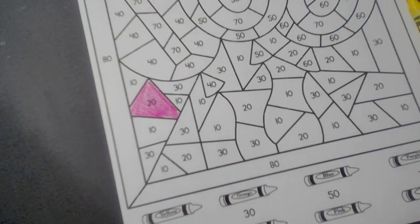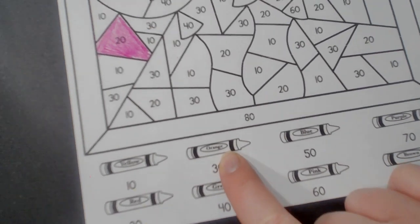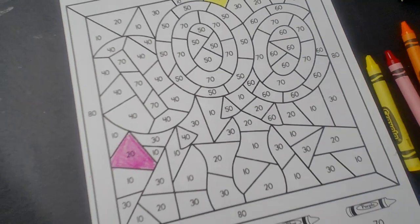Keep finding them. The 30s are going to be orange. So look for the 30s and color them orange.